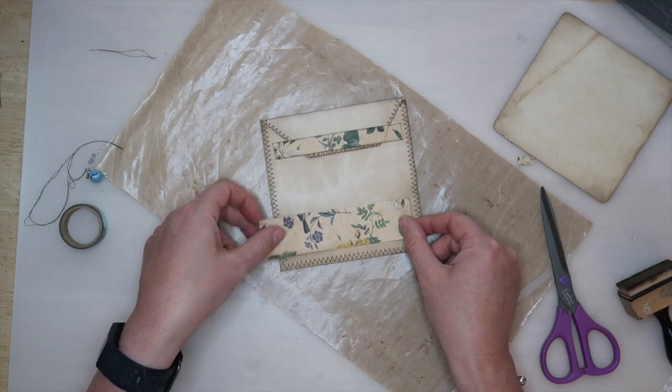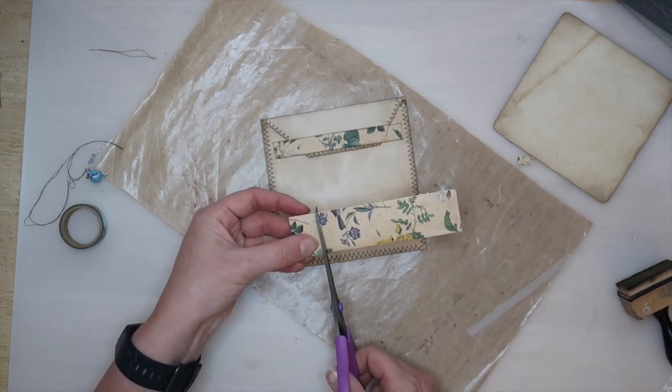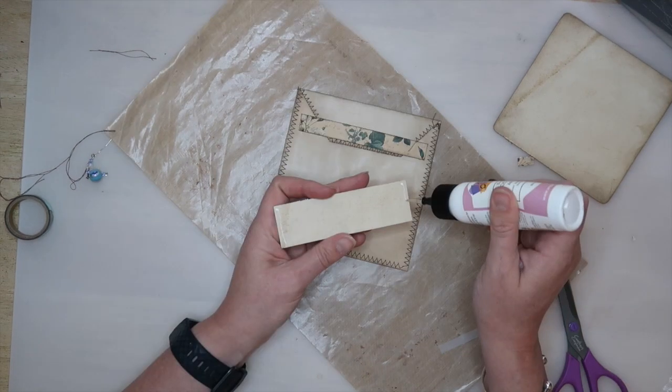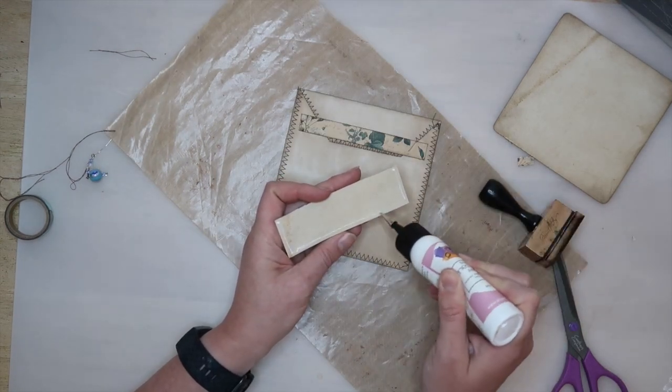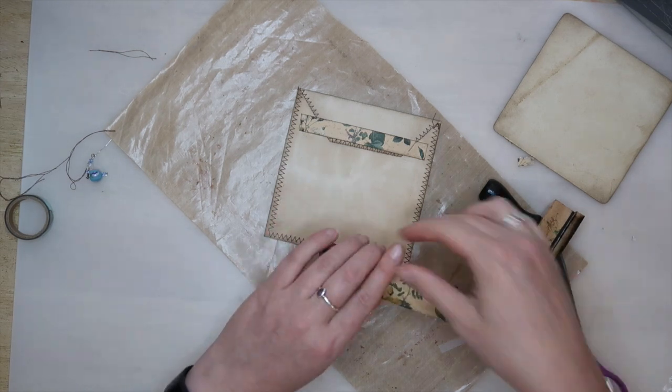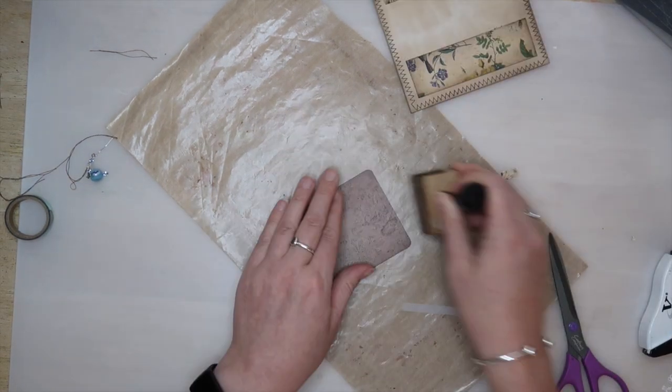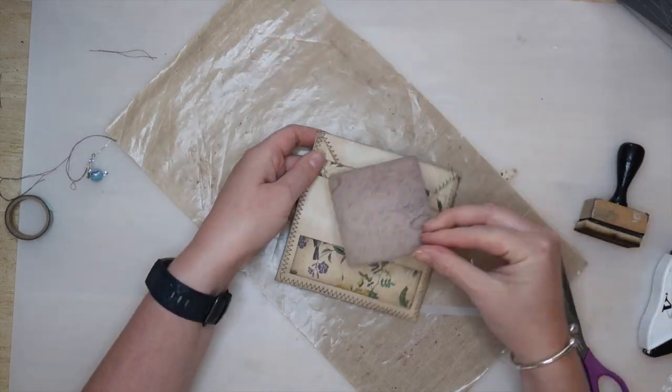I then added a little pocket to the bottom of that panel using the same design card again, this time using a wider piece. I created a patch pocket by gluing it down on the three edges and I then needed something to pop inside it so I made a little square journal card in a contrasting colour.